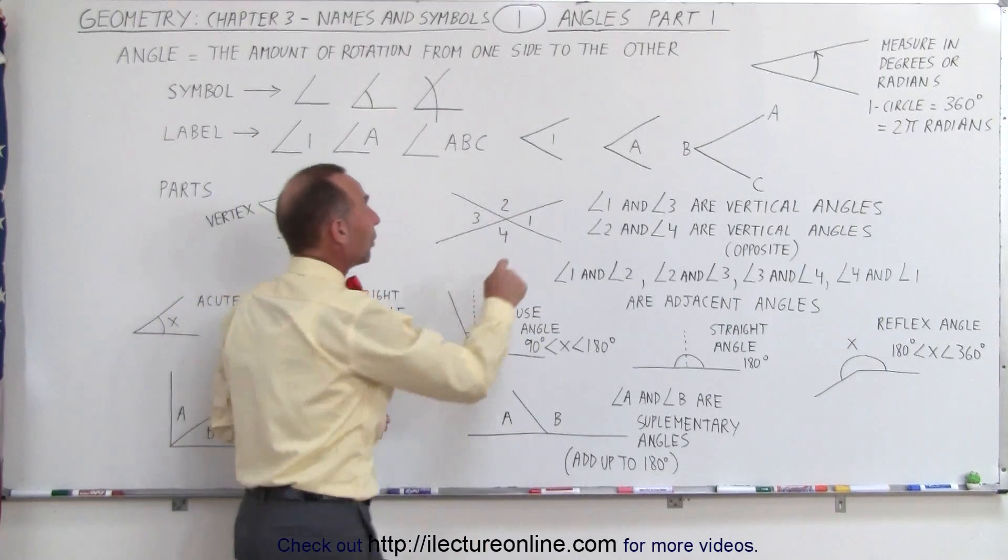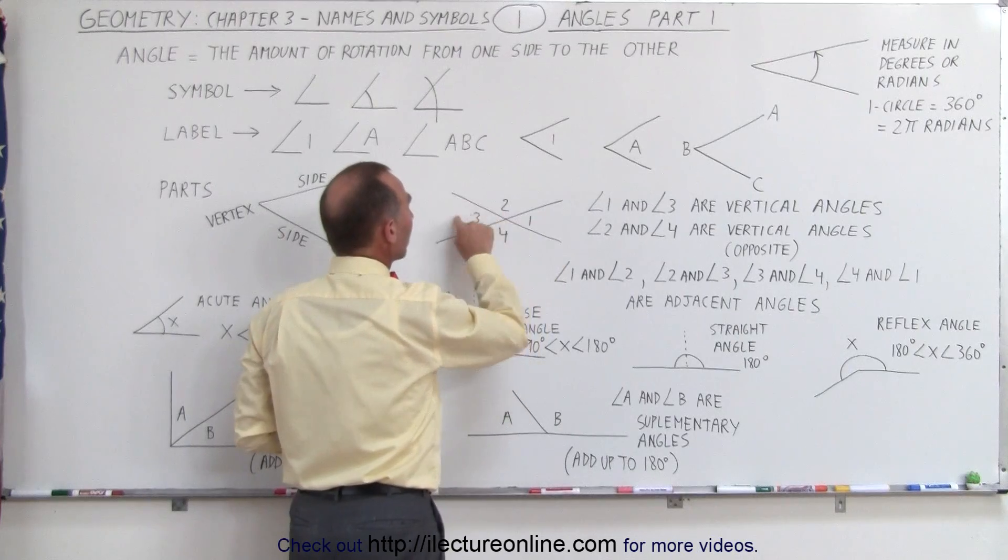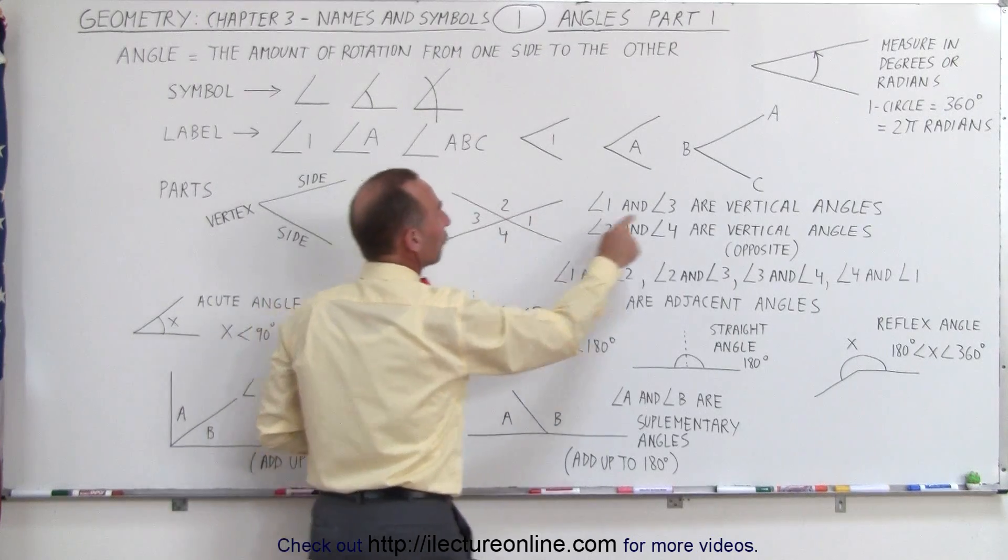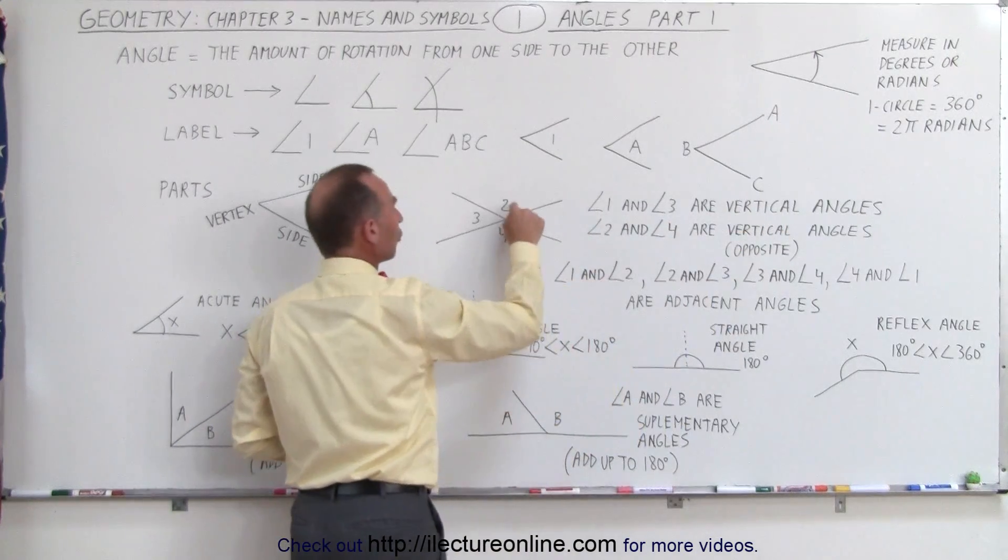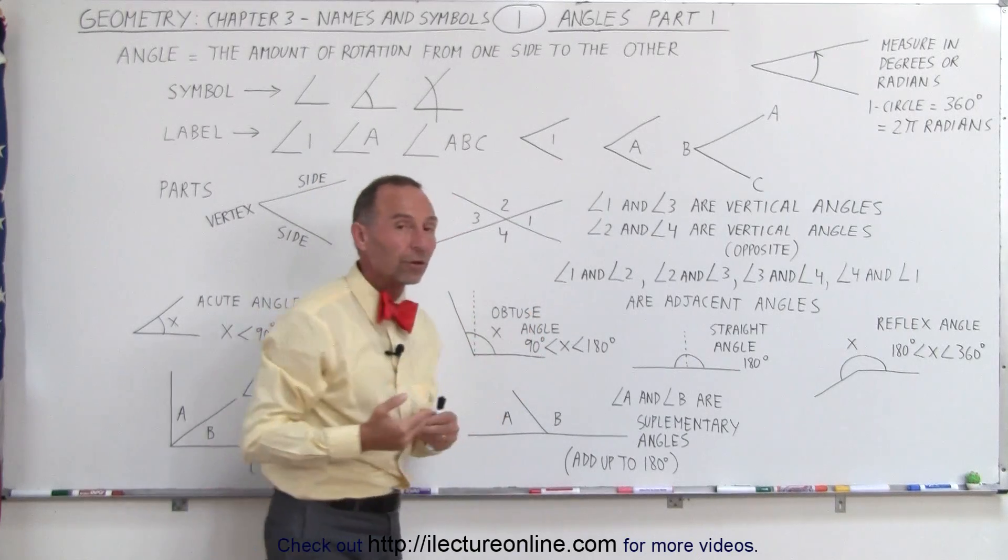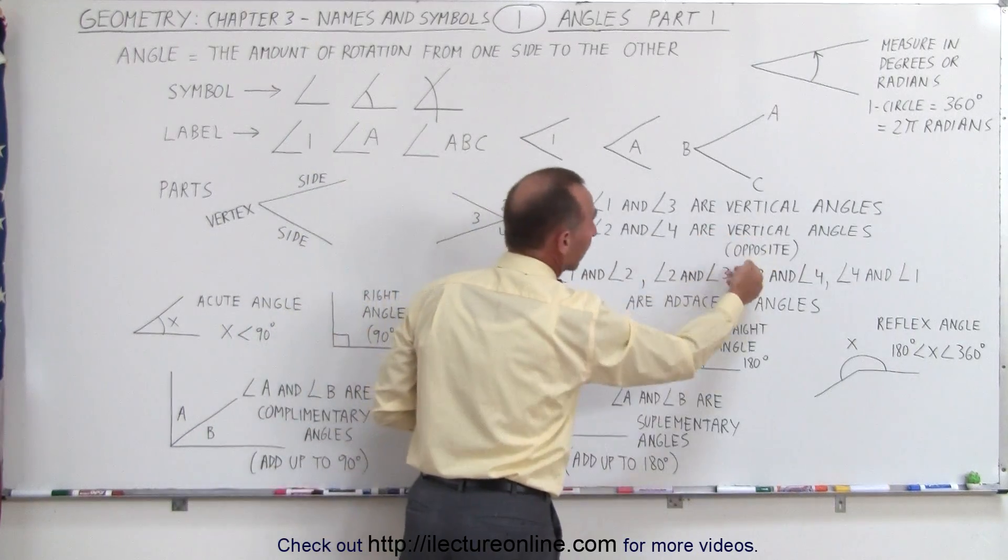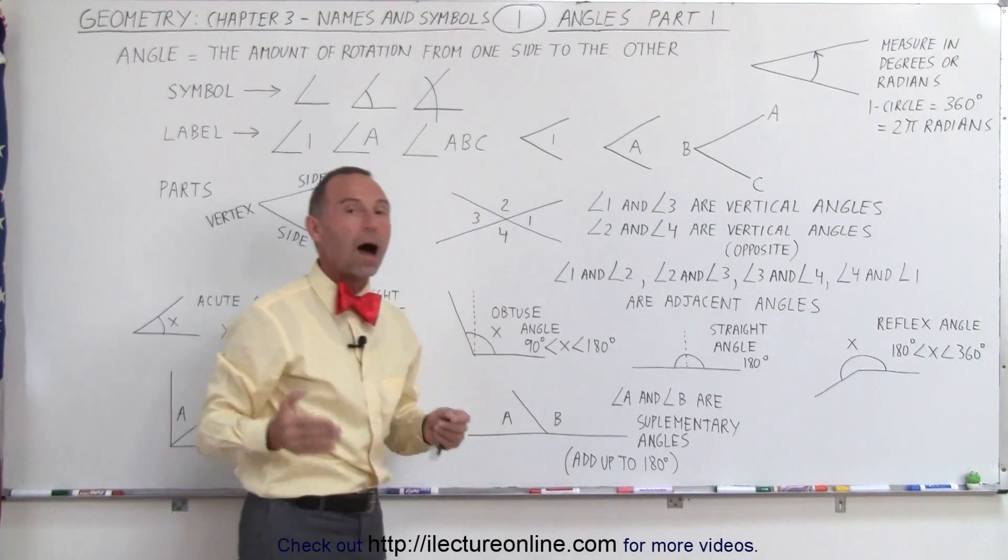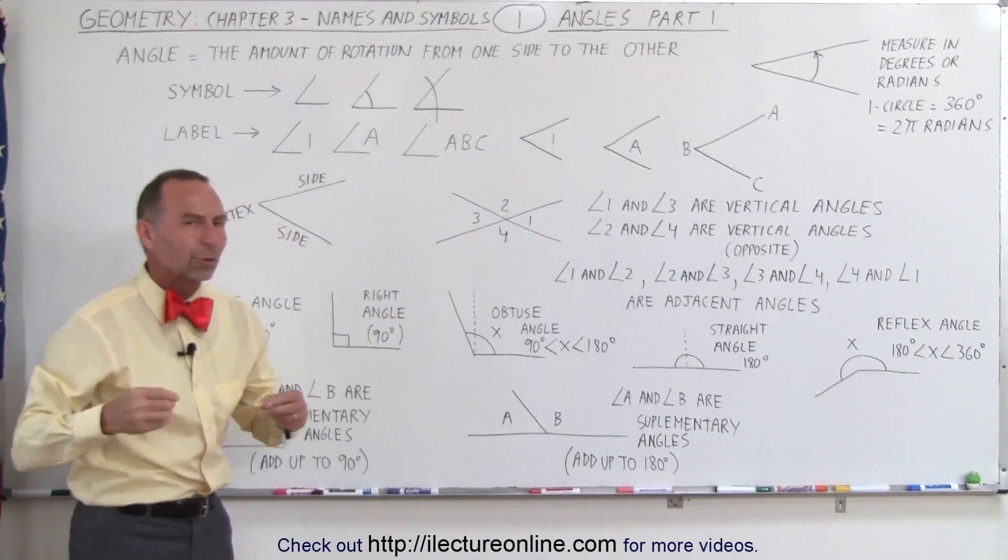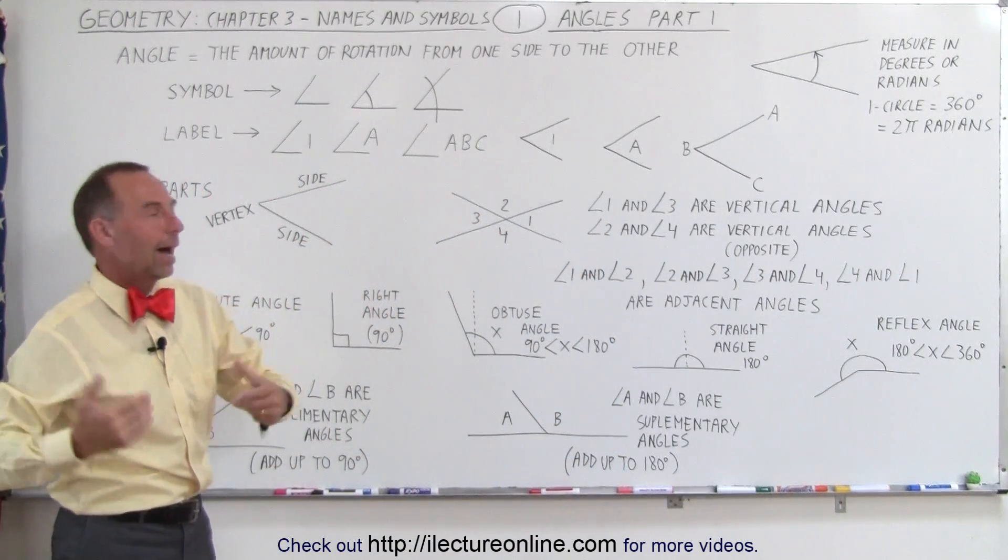Now notice angle 1 and angle 3 are opposite one another. These are therefore called vertical angles. Also 2 and 4 opposite to one another. So 2 and 4 are also called vertical angles. Or sometimes we use the word opposite angles. So when you hear the word vertical, just think about opposite.